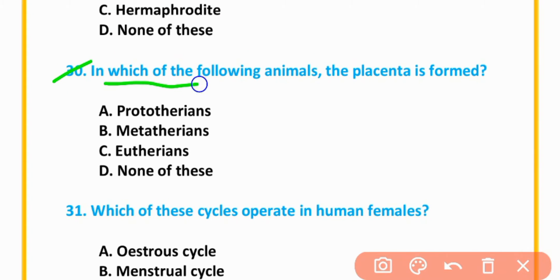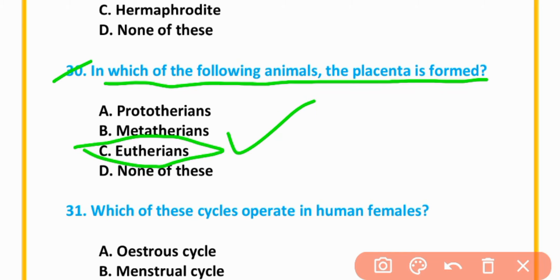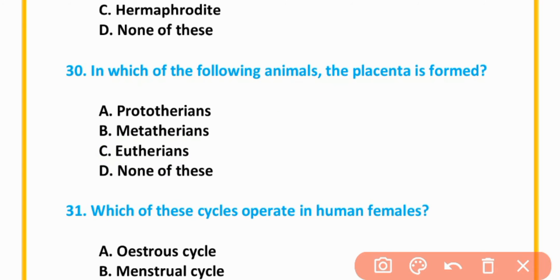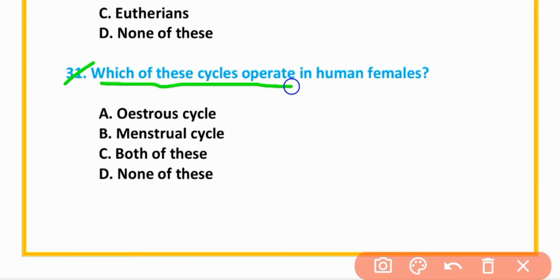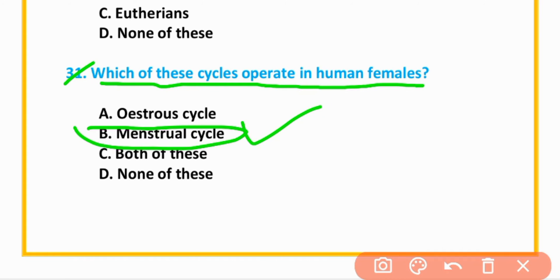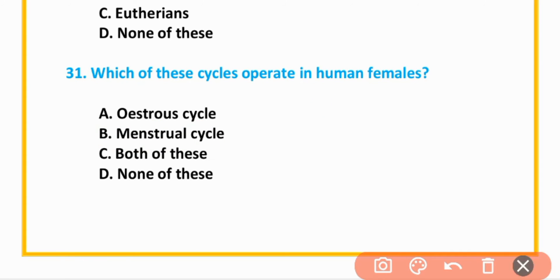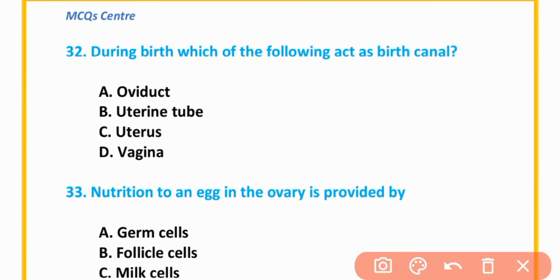MCQ number 30: In which of the following animals is the placenta formed? Option C — Eutherians — is correct. MCQ number 31: Which cycle operates in human females? Menstrual cycle. Option B is correct.